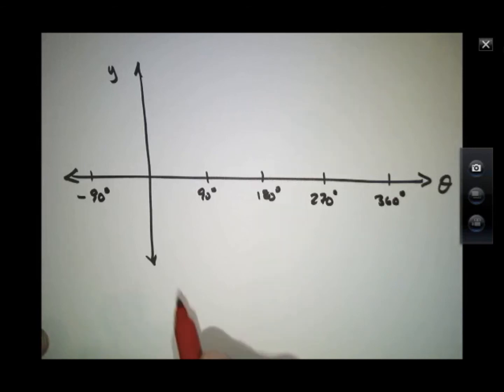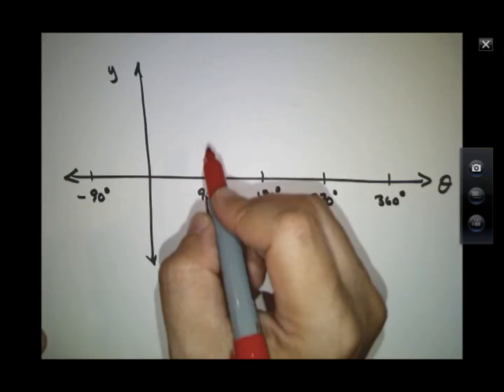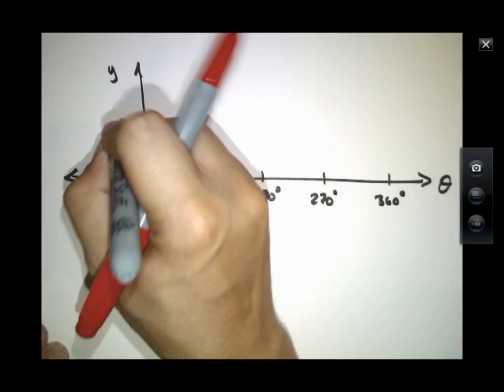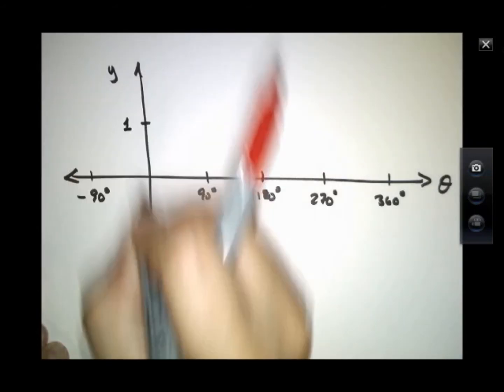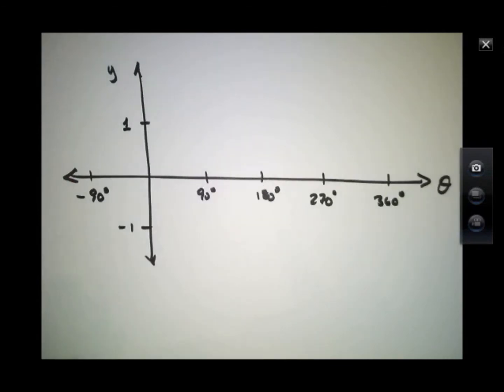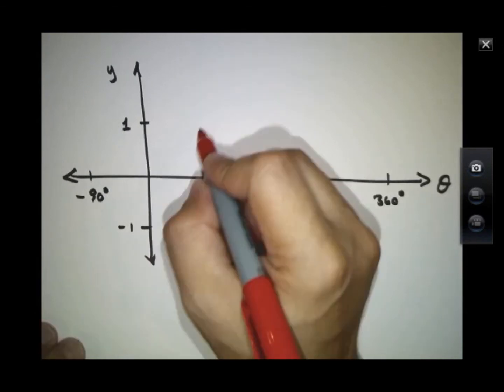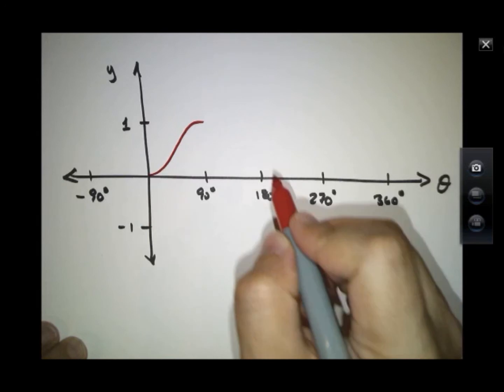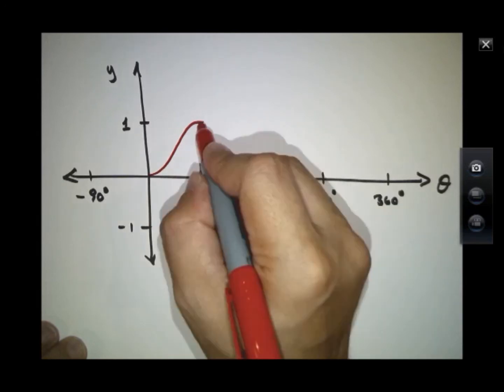So the sine function starts out at zero, it grows larger. It does something like this. And at 180 degrees the sine function goes to zero again.